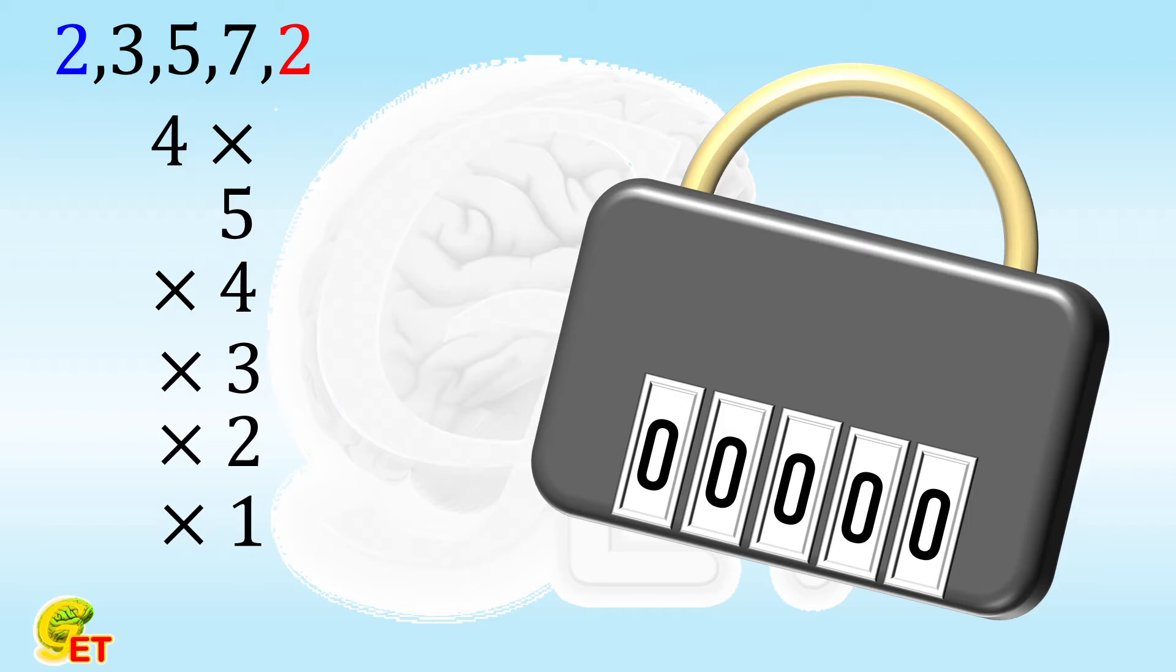Now let's go back to the duplication problem. Previously we regarded the blue 2 and the red 2 as different numbers, but in fact they are the same. If we exchange them we will find the results are exactly the same, so the final answer needs to be divided by two. So we end up with 240.